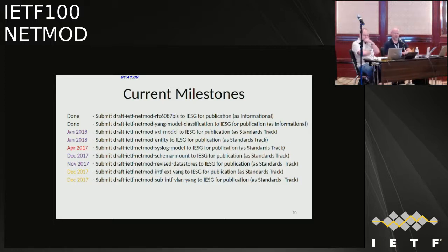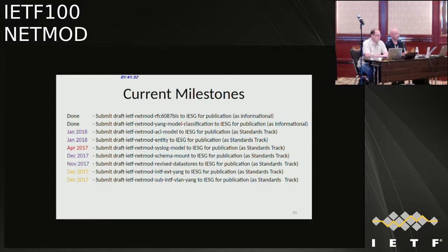From a milestones perspective, 6087 bis is complete but may need modification for tree diagrams, and model classification is done. The ACL model, entity, schema mount, and revised data store are all on track. The syslog model is lacking — it was supposed to be published back in April and we're waiting for a response from the author to the Shepherd write-up. Interface extensions and sub-interface VLAN are a little bit behind — just a warning. We may not get them out in December, but hopefully we will.